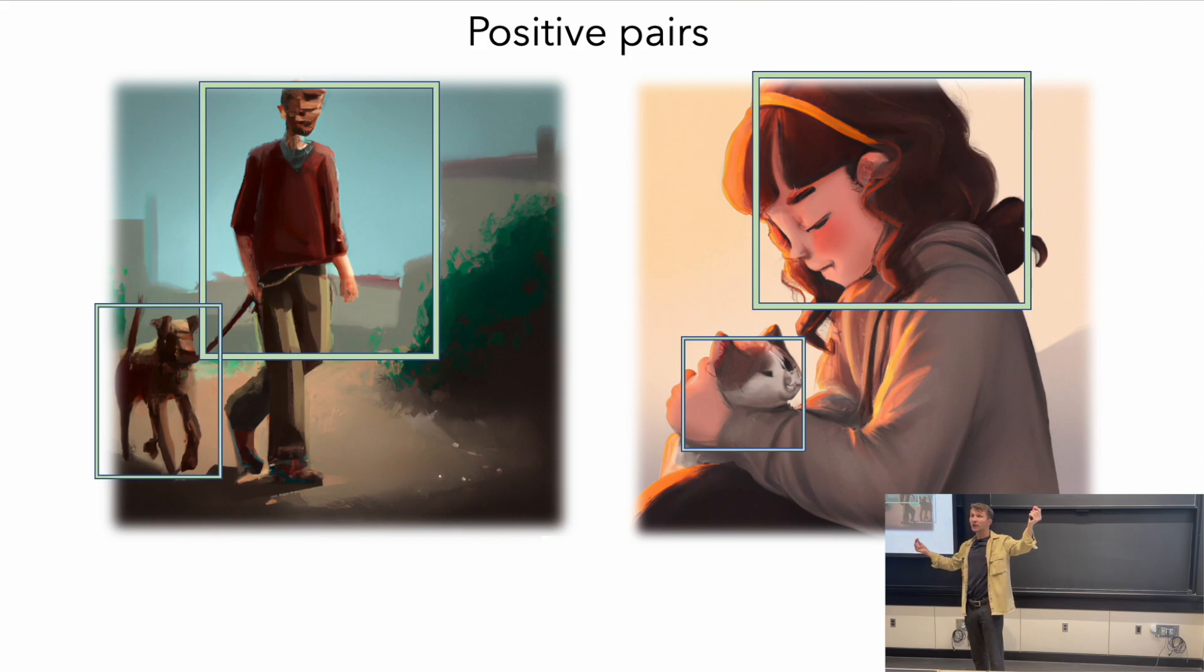But when you have enough data, this is true statistically on average. When you take two different random images, it's more statistically probable that things appearing in the same image are more related than those that appear in different images.